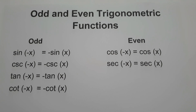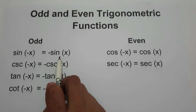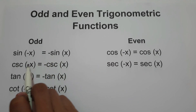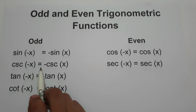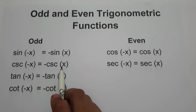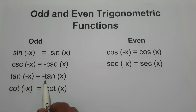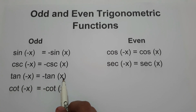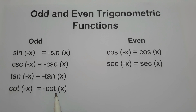Let us determine first the odd functions. The first one is sine: sine(-x) = -sin(x). And the reciprocal of sine is cosecant: cosecant(-x) = -cosecant(x). Next we have tangent: tangent(-x) = -tangent(x). And the reciprocal of tangent is cotangent: cotangent(-x) = -cotangent(x). So these are the odd functions.